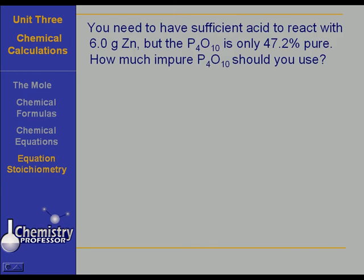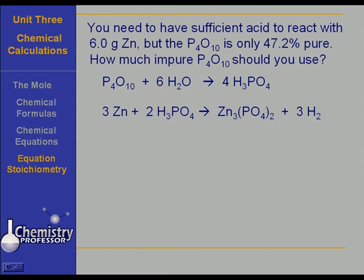This is the kind of problem that gives students an awful lot of difficulty because we are asking you to find how much of an impure substance you should use. In this problem, we are going to use the same series of equations that we used in the previous problem. We are going to have P4O10 reacting with water to produce phosphoric acid, and we are going to take that phosphoric acid and allow it to react with zinc.